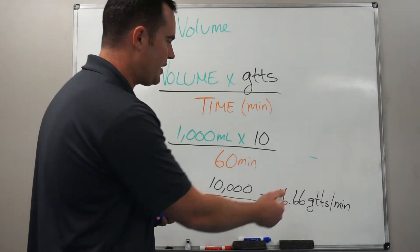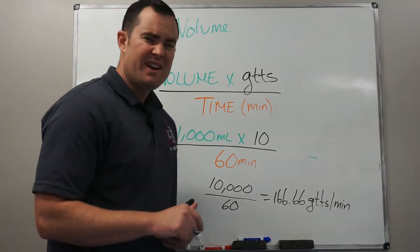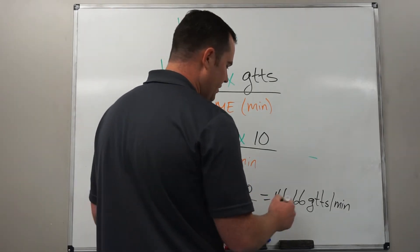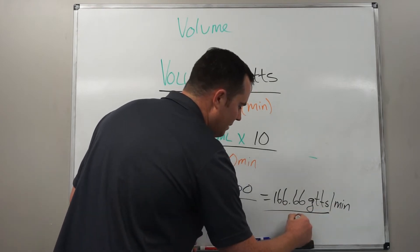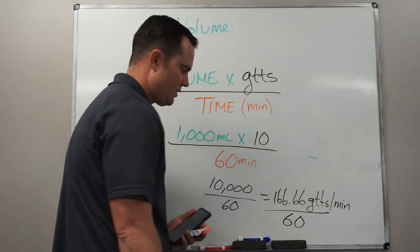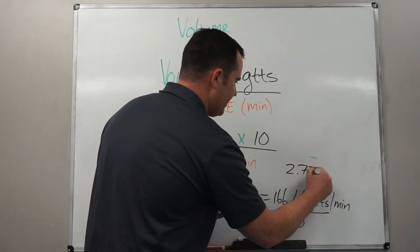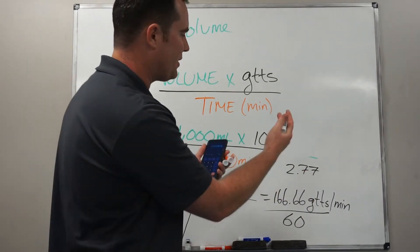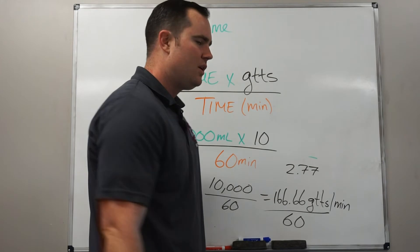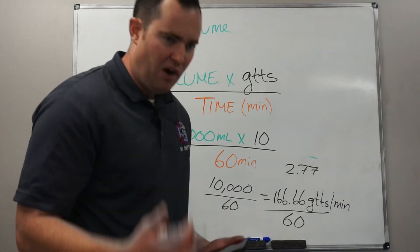Rounding that up gives 167 drops per minute. To determine drops per second, divide by 60 again, which gives 2.77 — about three drops per second. So if you're in the back of a truck trying to gauge your drip rate, it's roughly three drops a second.